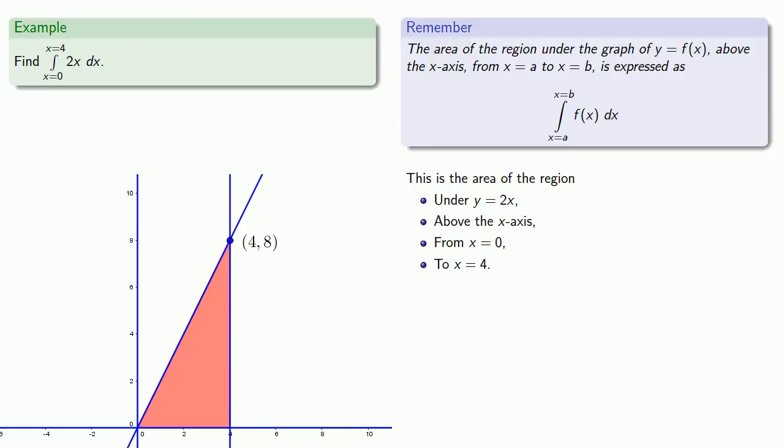We find this triangle has width 4 and height 8, so its area is one-half base times height, or 16, which will also be the value of the definite integral.